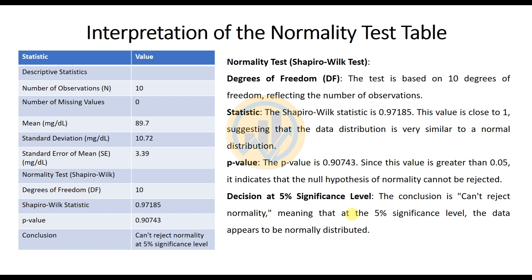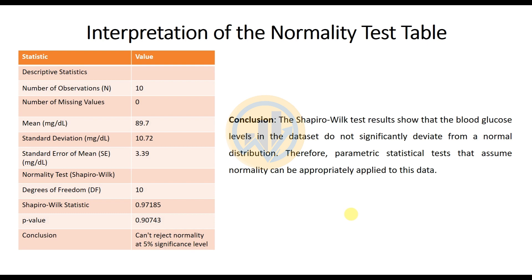In conclusion, the Shapiro-Wilk test results show that the blood glucose level in the data set does not statistically deviate from a normal distribution. Therefore, parametric statistical tests that assume normality can be appropriately applied to this data. This section covered how to arrange data, apply it in the OriginPro worksheet, analyze normality, convert the output to a publication-format table, and interpret the results. If you have any doubts, leave a comment in the comment box. Thank you for watching.